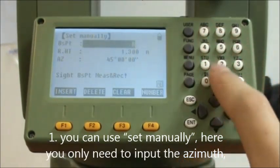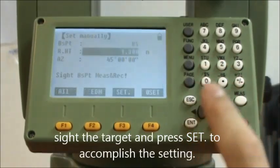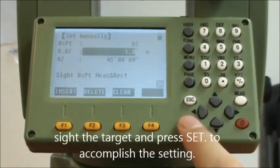First, you can use set manually. Here you only need to input the azimuth, sight the target, and press set to accomplish the setting.